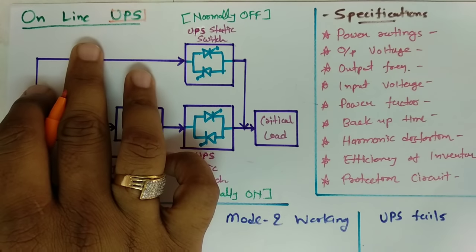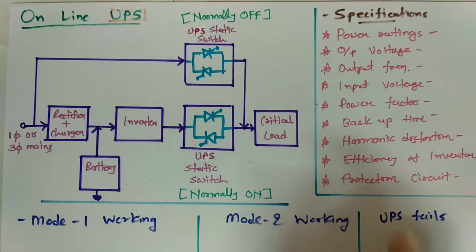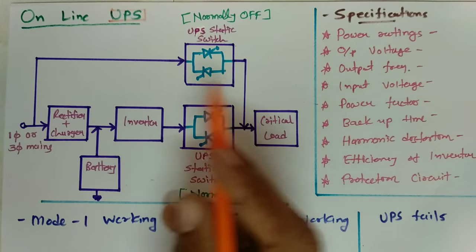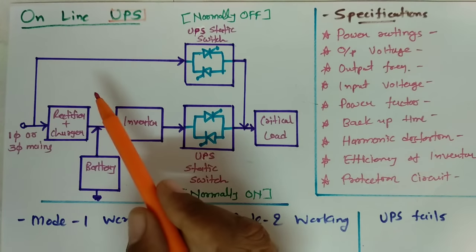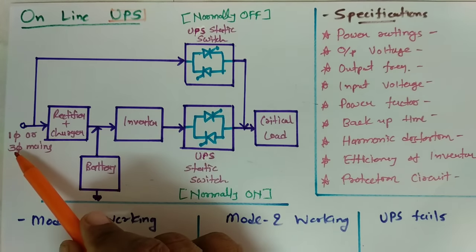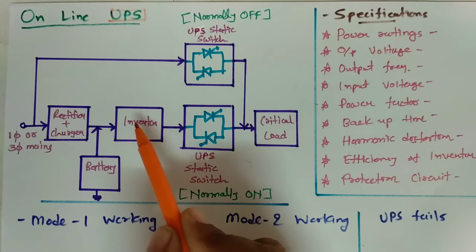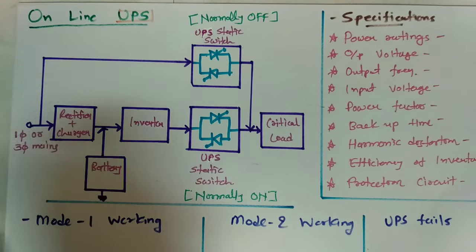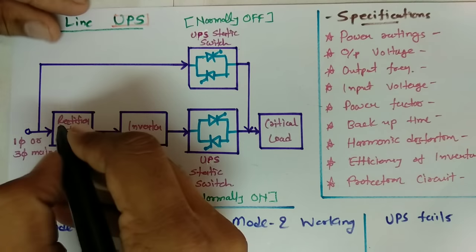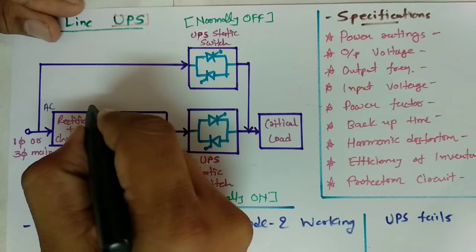Now, online UPS is the category I will be explaining in this session. So in online UPS, the circuit connection is almost similar to offline UPS, where we have one phase or three phase power supply that is given to a rectifier circuit. That rectifier circuit gives DC output. So at the input of rectifier, AC input is there, and the output of rectifier is DC.